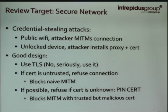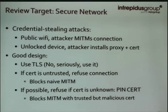The first step was just looking at the CA certs, focusing on the secure network target. I'm looking at credential-stealing attacks: if you're on public Wi-Fi and somebody wants to man-in-the-middle your connection, they can get your credentials. The good design: use TLS, and if the certificate is untrusted, refuse the connection. I want to see apps block a naive man-in-the-middle — somebody just throwing up a proxy without even bothering to have a cert. If at all possible, it would be great if the app could refuse the connection if the certificate is unrecognized — in short, if you can pin the cert.